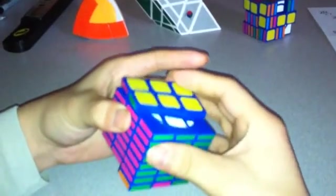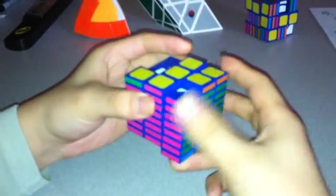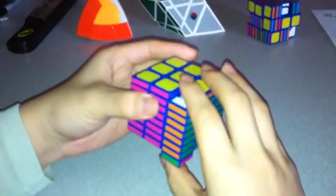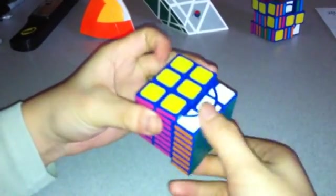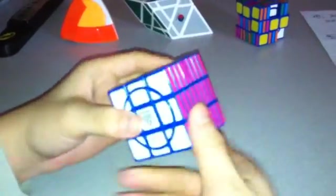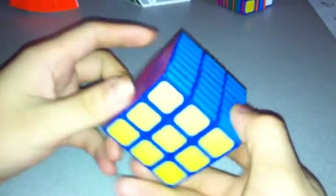So R2, U, R2, U, R2, 2U, R2, 2U, R2, U, R2, U inverted, and R2. And that's how I solved the Whit Eden Super 3x3x8 Type 1. Thank you for watching.